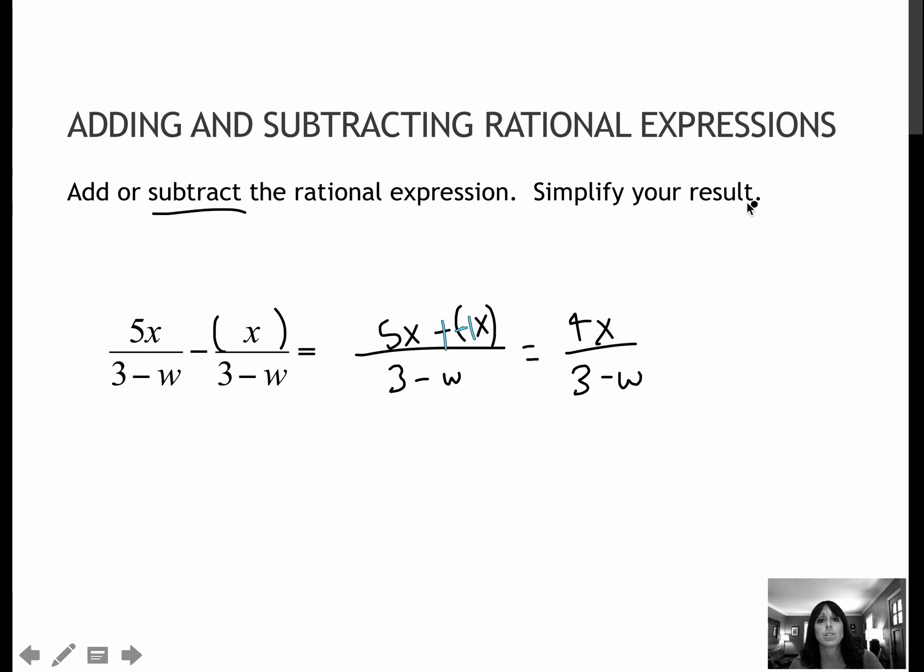Again, we're not going to focus on the restriction of the domain, but if I were going to restrict it, I again would set it equal to 0, as always, and solve to get the variable all by itself, and in this case, that would give me 3. So w cannot be 3, but it could be anything else.